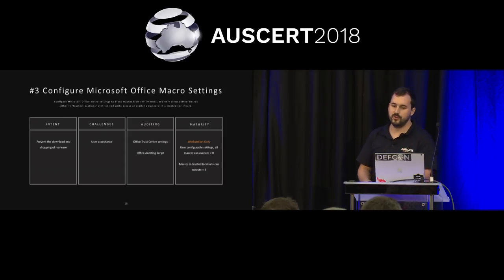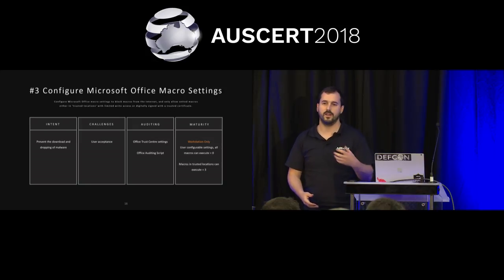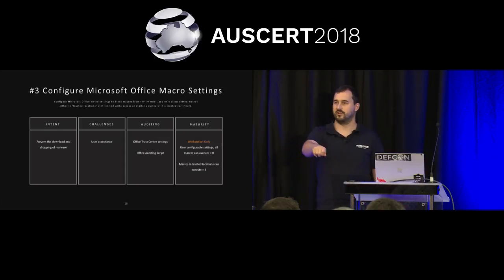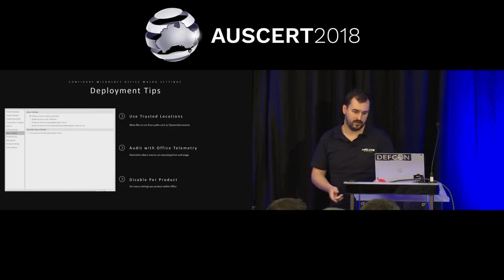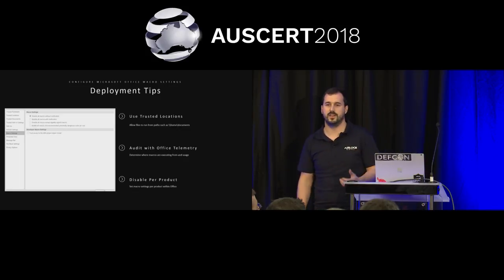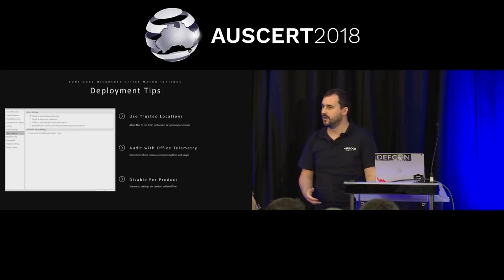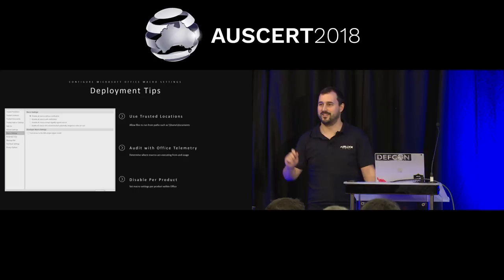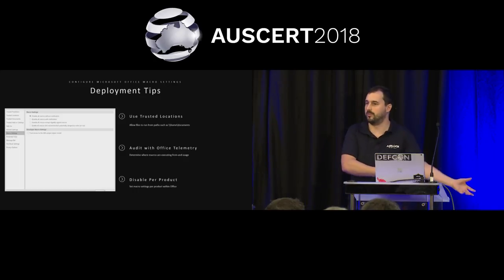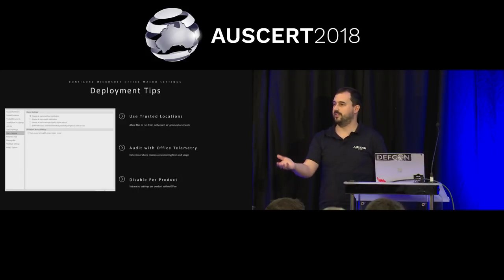Maturity is zero if you have user-configurable settings. If you don't actually enforce macro settings in the registry or via group policy, ASD consider that to be a zero — because even though by default Office will say macros are disabled with a notification, users can just go in and change that. Maturity level three is macros in trusted locations can execute. Trusted locations in Office are folder paths or network shares where any document inside those locations can execute without security restrictions.